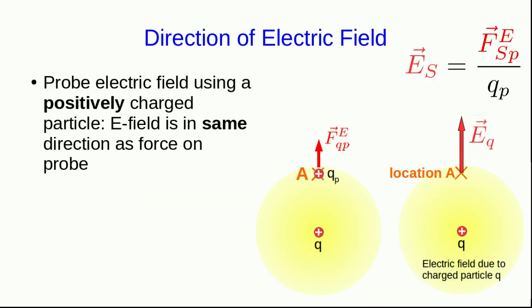I'm going to finish up this video lecture by drawing your attention to the direction of the electric field. In all the examples I've done, I've used a positively charged probe particle. And so, the E field ends up being in the same direction as the force on the probe particle. That makes sense from the definition. We're taking a force vector and we're dividing by a charge, which is just a positive scalar. And we know that when we divide a vector by a positive scalar, we get a new vector that is in the same direction.